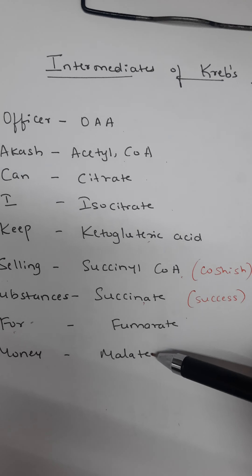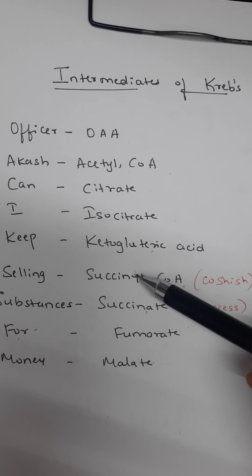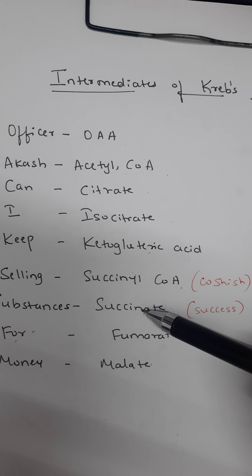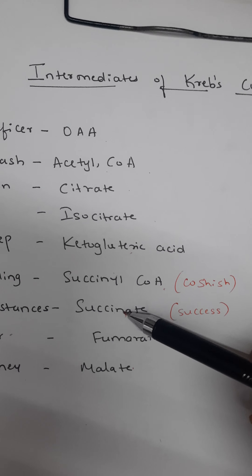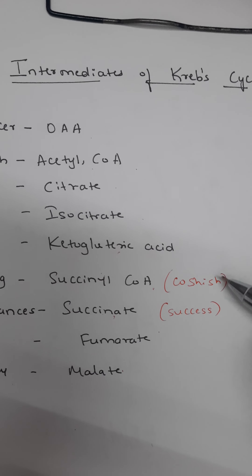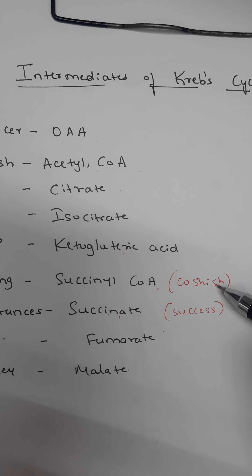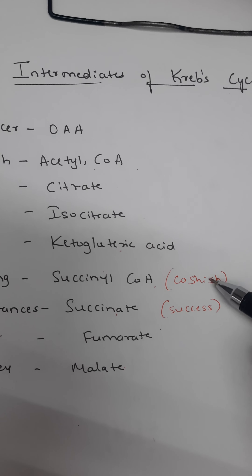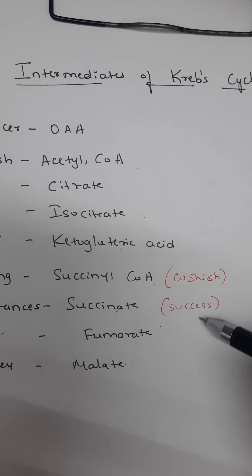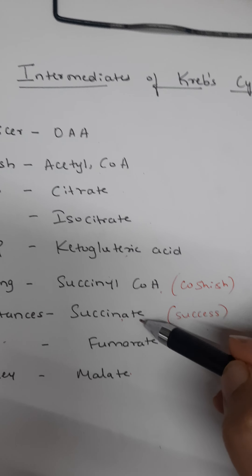Now here there are two S's: succinyl coenzyme A and succinate. To remember the order, the trick is 'cautious' — first we try, then only we get success. So first is succinyl coenzyme A, and then succinate.